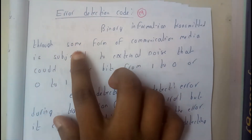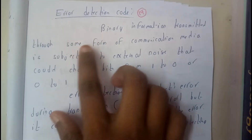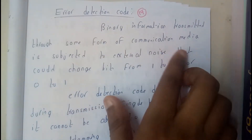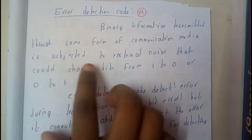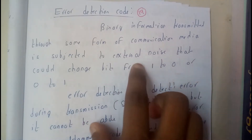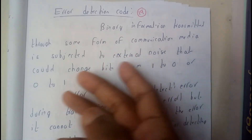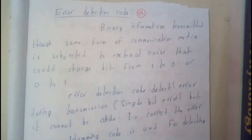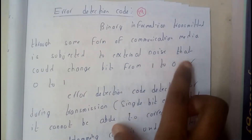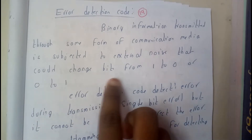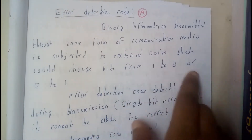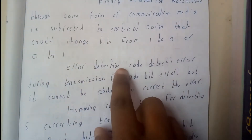Binary information transmitted through some form of communication media is subjected to external noise. External noise is nothing but some kind of unwanted signals or anything like that, which could change the bit from one to zero or zero to one.